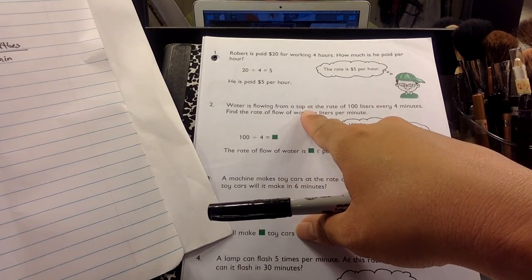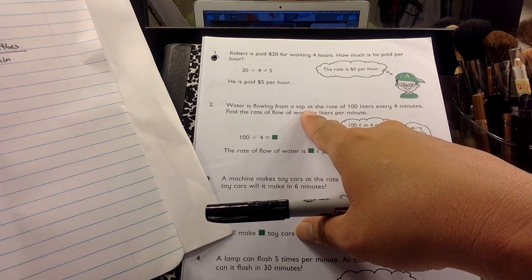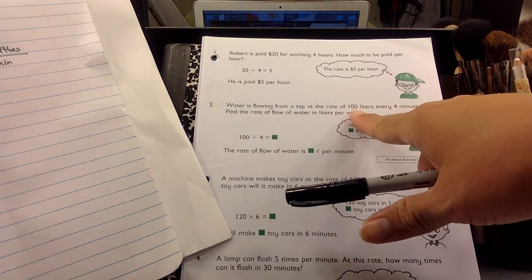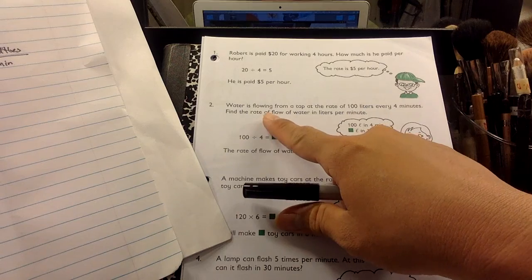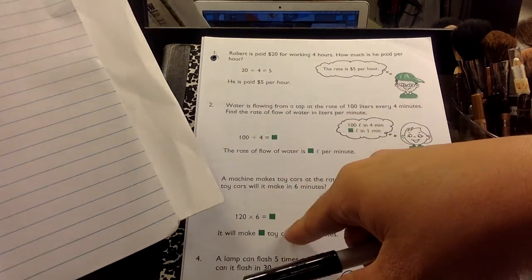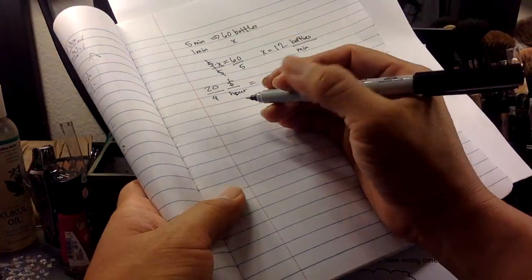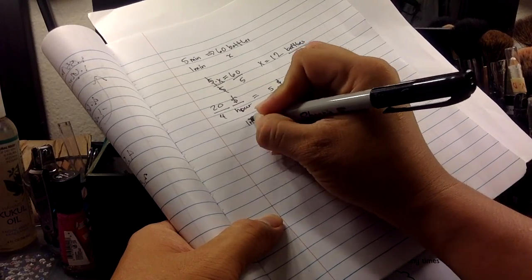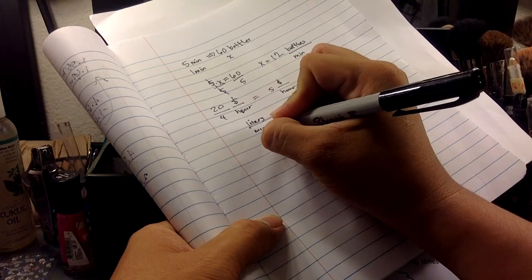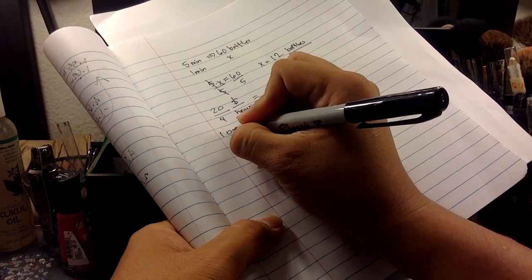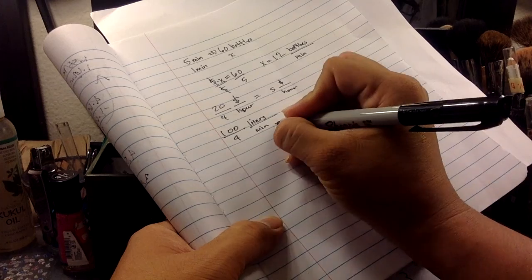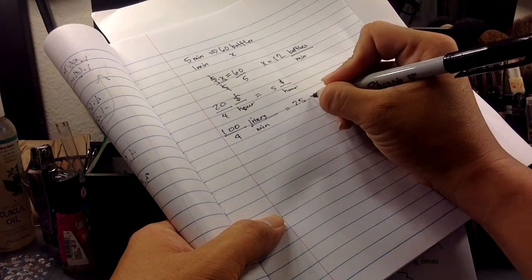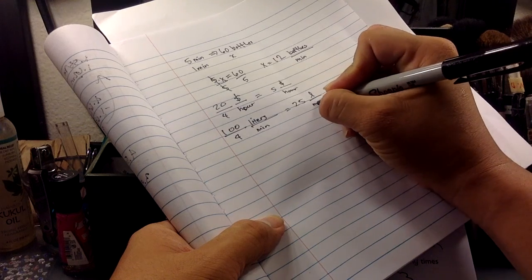Water is flowing into a tap, which is basically from a tap, which is a sink, at a rate of 100 liters for every four minutes. Find the rate of flow in liters per minute. Okay. So you want liters per minute. And it's going 100 liters every four minutes. I can reduce this to be 25 liters per minute.